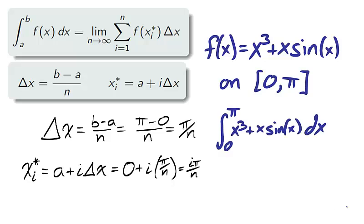Therefore, the integral from zero to pi of x cubed plus x sine of x is the limit as n goes to infinity of the sum from i equals 1 to n, f with x of i star, which is i pi over n, times delta x, which is pi over n.